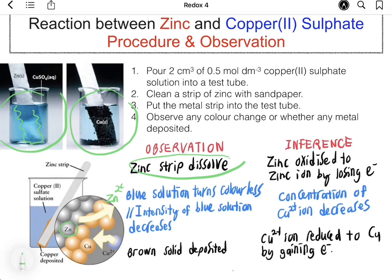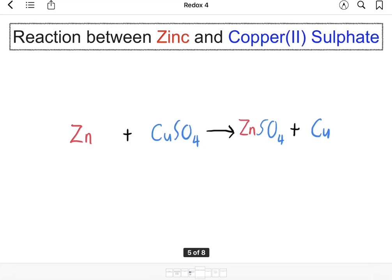Sometimes the blue solution will turn colorless if all the Cu²⁺ ions are reduced to copper metal by gaining electrons. A brown solid will be deposited on the zinc surface due to Cu²⁺ ions being reduced to copper. We will now learn this redox reaction in terms of increase or decrease of oxidation number. The oxidation number of zinc is zero because it is a neutral element, and so is copper. Copper ion is +2, sulfate ion is -2, zinc ion is +2, and sulfate is -2.